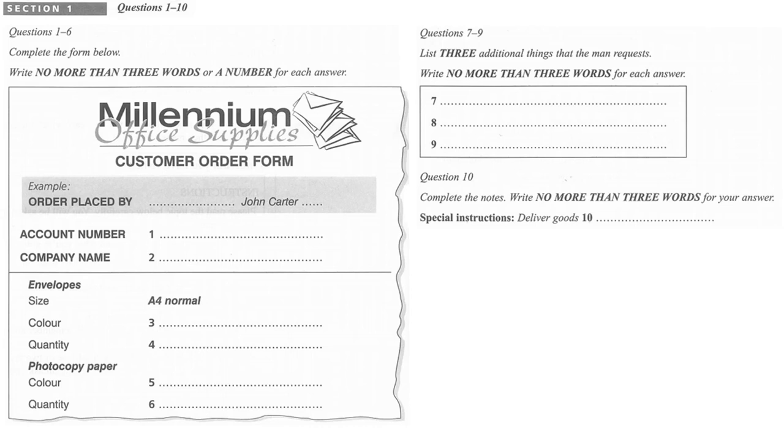Section 1. A man wants to place an order by telephone for some office stationery. Listen to the conversation between the woman and the man and answer the questions. First you have some time to look at questions 1 to 6.